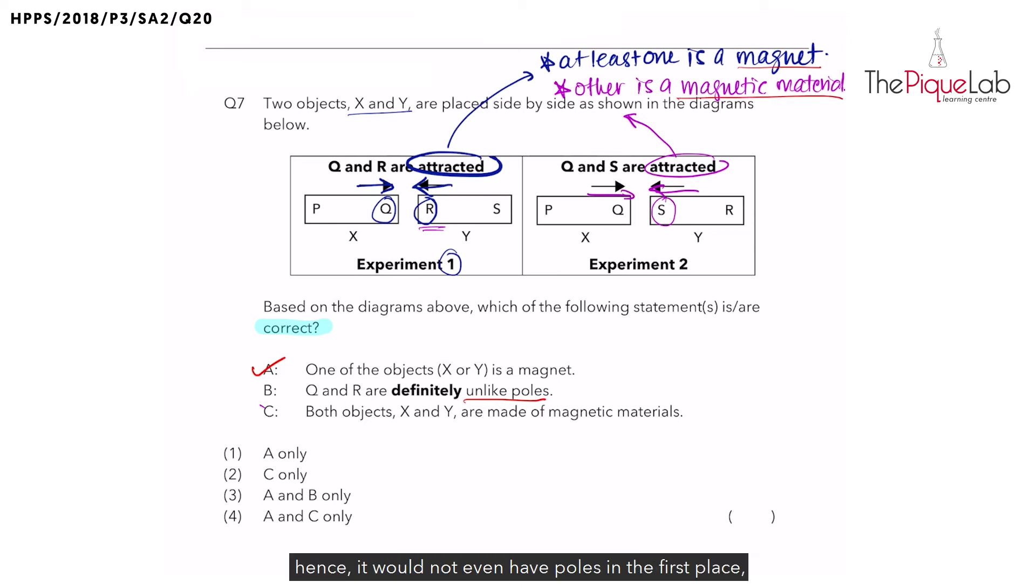Statement C: Both objects X and Y are made of magnetic materials. Some students tend to put a cross for this statement because they think, 'Oh, we only have one magnetic material; the other is a magnet, so wrong.' But students need to take note that even magnets are made of magnetic material.